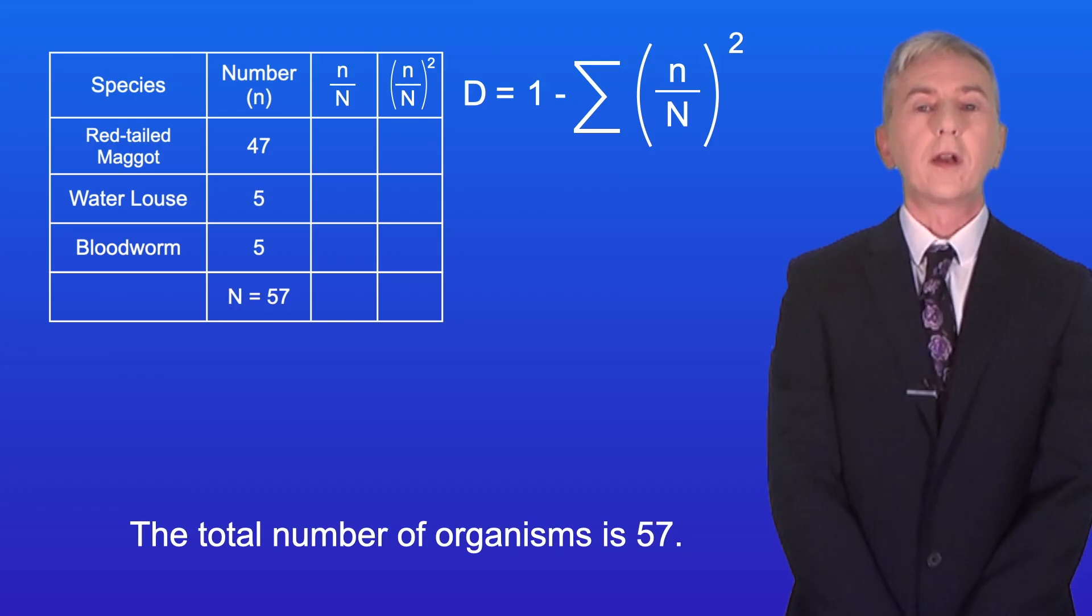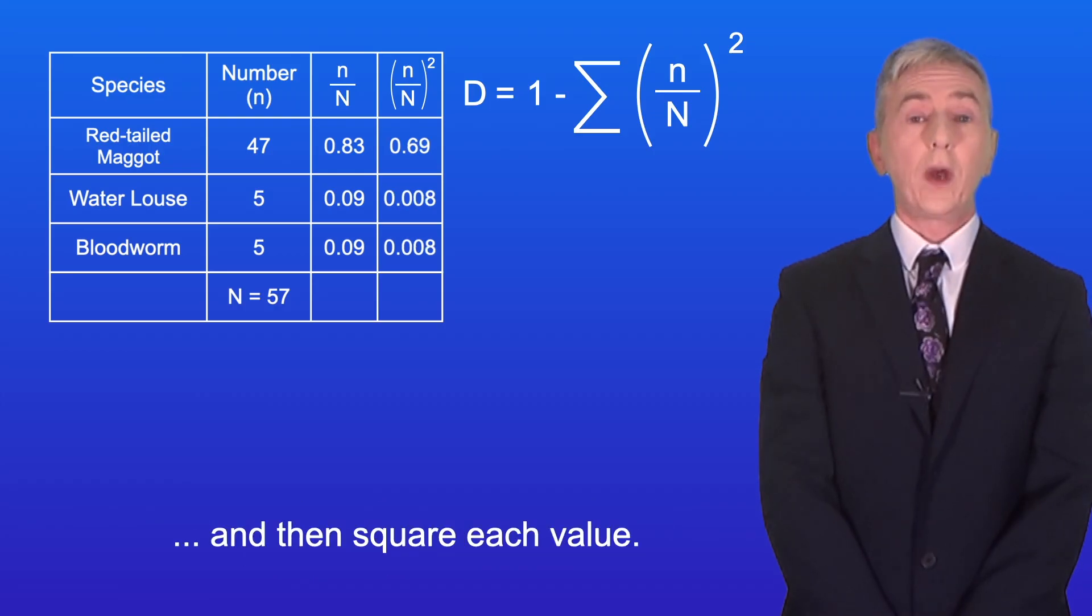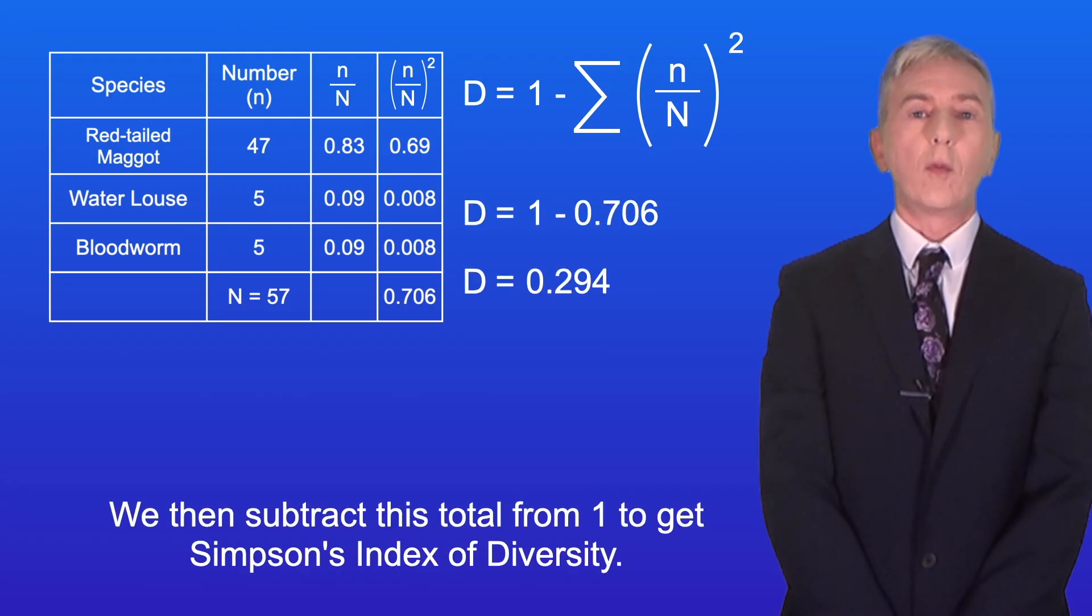Okay, the total number of organisms is 57. We now divide the number of each species by the total and then square each value. We now sum these numbers. And we then subtract this total from 1 to get Simpson's index of diversity.